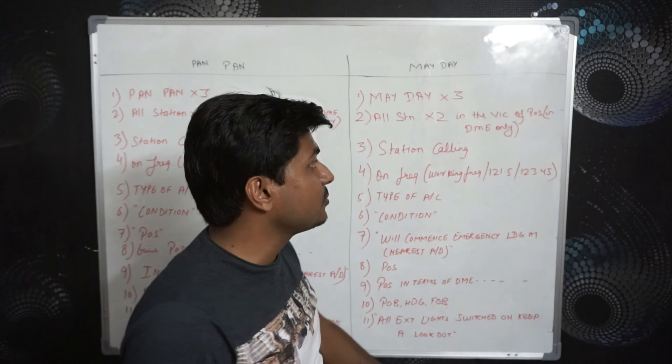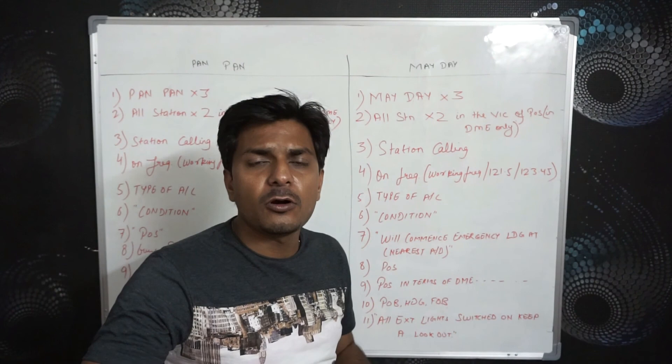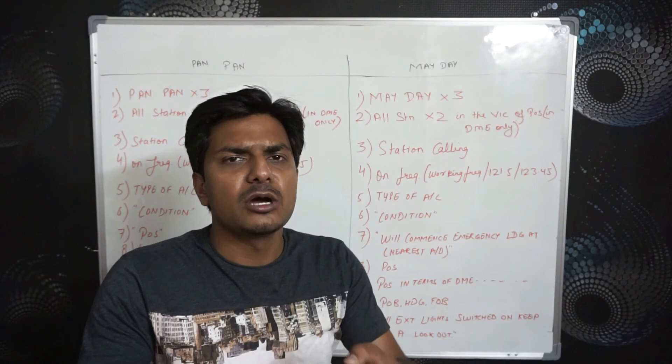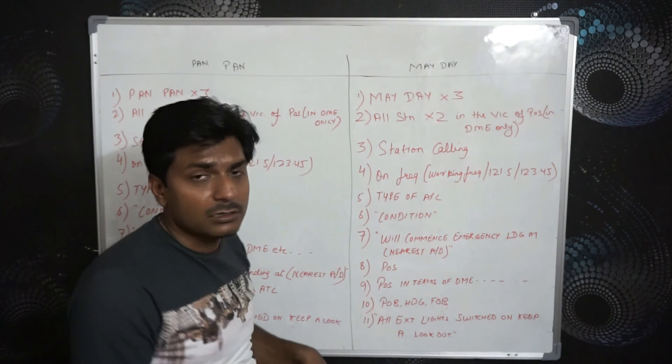You don't have to give position in the full normal format. What we do at the position-giving point is give position in terms of DME only. No need to say 'to' or 'from.' You say only 'in the vicinity of 25 DME, Bravo Papa Lima,' for example. Just write the vicinity distance and the navigation point around which you are.